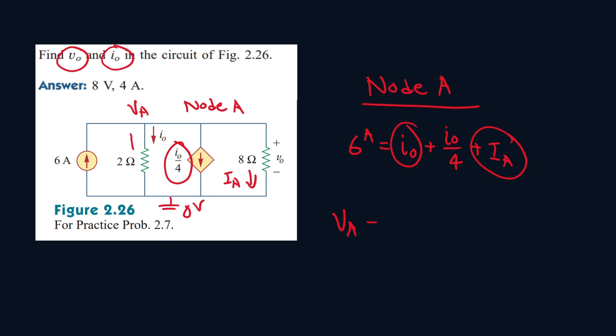So it goes, the I0 goes from a high potential to a low potential. So it will be VA minus 0 all over the resistor, which is 2 ohms. That's what I0 will be equal to.